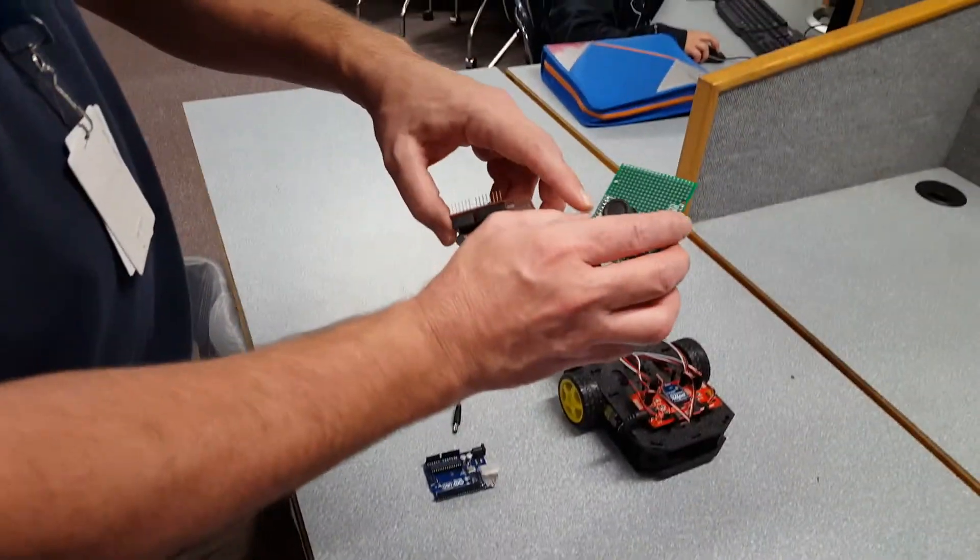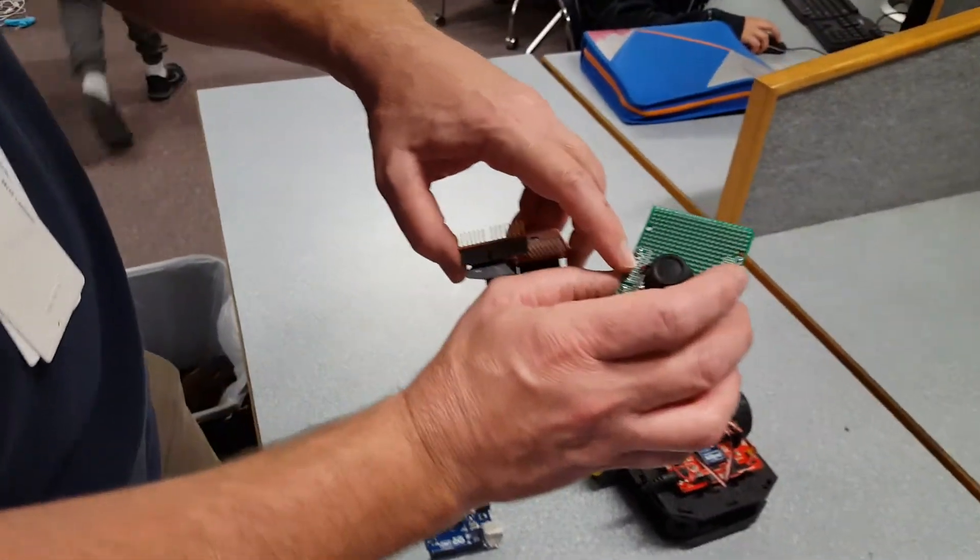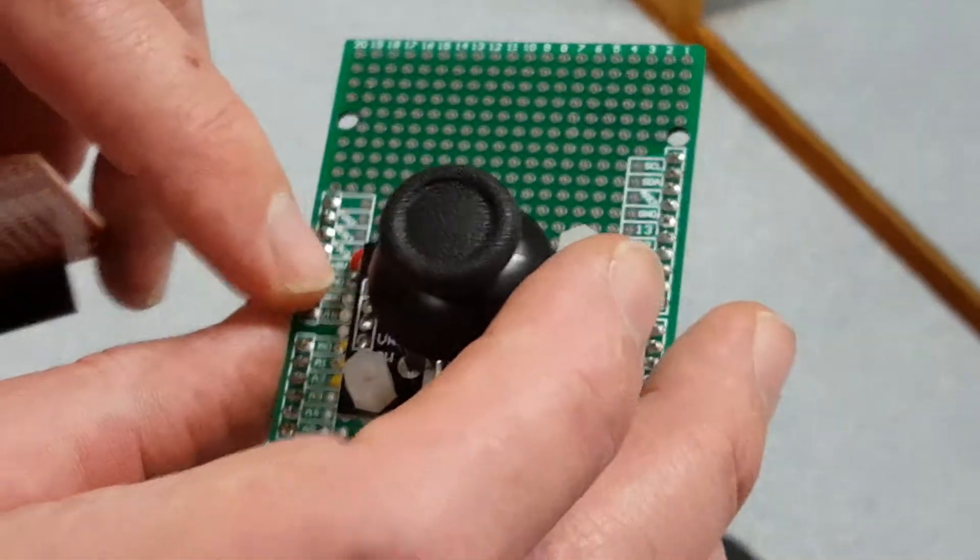First, the joystick shield is tying into the analog pins on A0, A1, and A2.